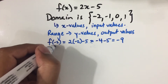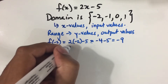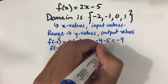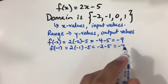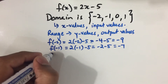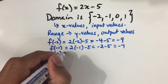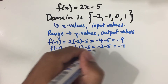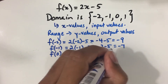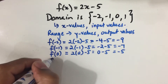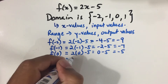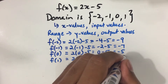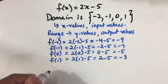Now let's look at the other input values. f(-1) = 2 times -1 - 5 = -2 - 5 = -7. So the output value is -7. When x = 0, f(0) = 2 times 0 - 5 = 0 - 5 = -5. And when x = 1, 2 times 1 - 5 = 2 - 5 = -3.